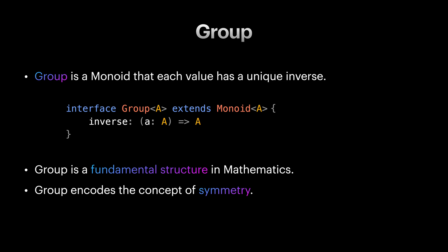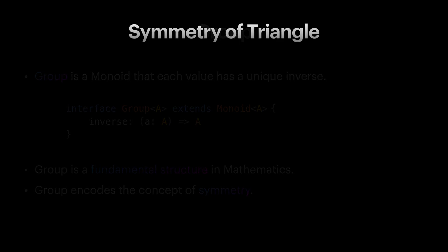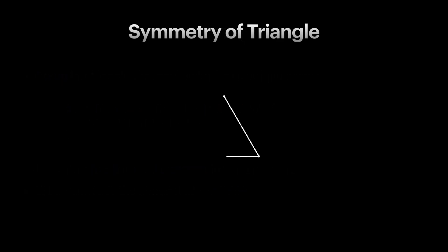To understand groups better, let's take a look at an example. Think of a triangle with equal sides in a flat surface. What actions and transformations can we do on a triangle to still get the same look?